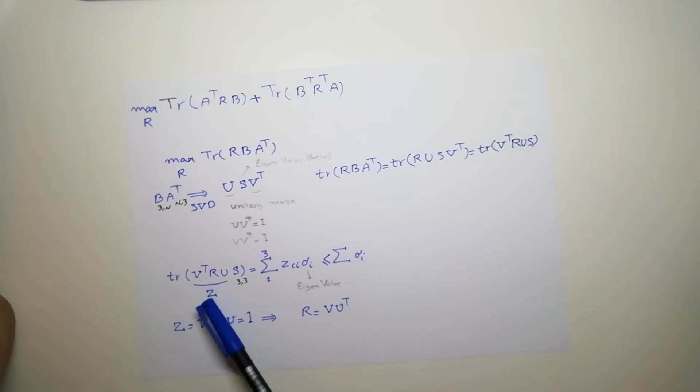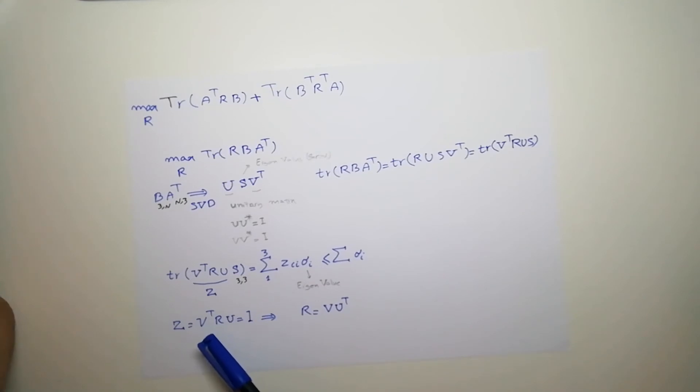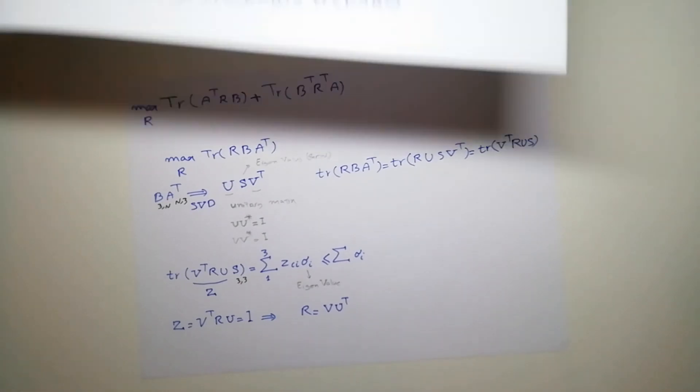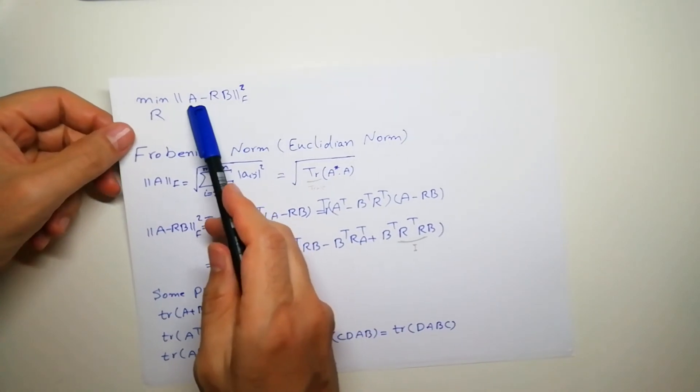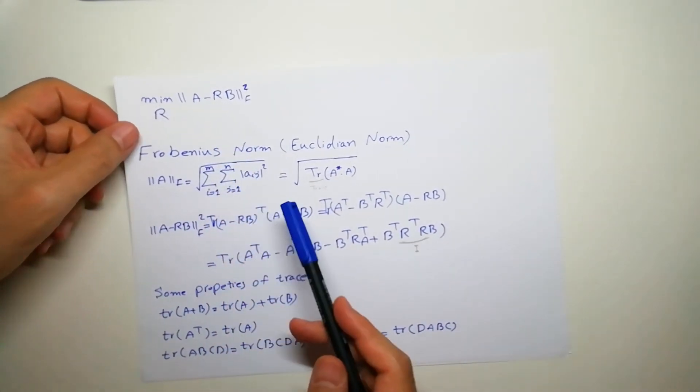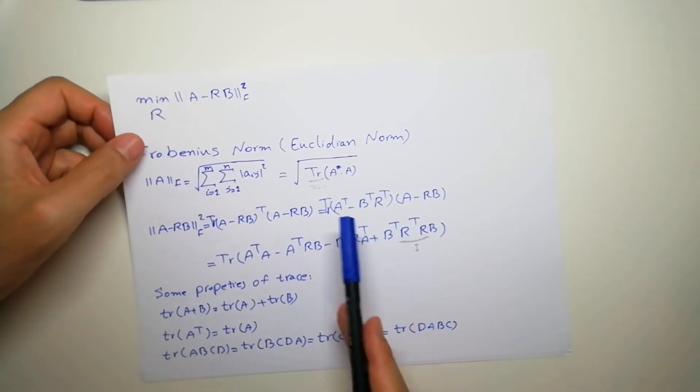So we call this Z, matrix Z. So if this value is equal to identity, I can simply, I'm looking for R, R as a variable. I can multiply by V T, V and U transpose from left and right to get me the optimal R. So this is R that minimize or maximize this term, which is actually going to minimize this term. So the points going to be mapped to each other. That's the R that I'd be looking for. And that was a proof.